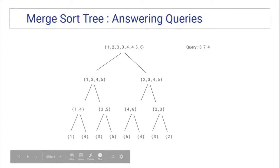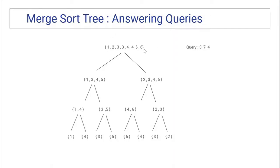We are going to perform the query operation exactly the same way as in a normal segment tree. First we go to the root element. The root covers the range 1 to 8. The query range and the node range have a partial overlap, so in a segment tree we make two recursive calls — left and right. We make the left recursive call; this node represents elements 1 to 4, and again there is a partial overlap with query range 3 to 7, so we make two recursive calls again.